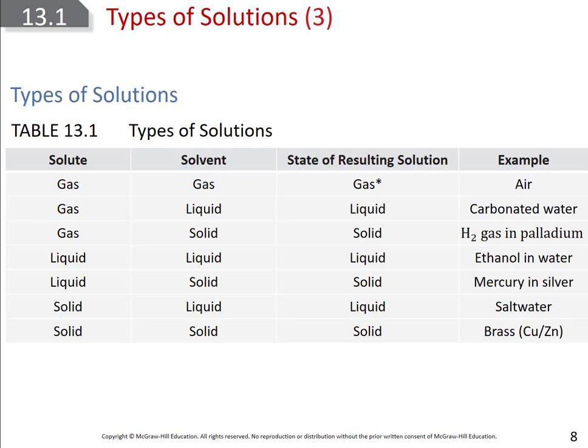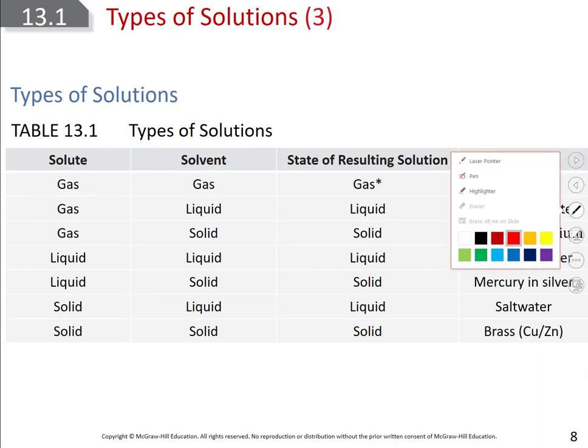This table on page 564 shows examples of types of solutions. In Chapter 4, we focused on aqueous solutions, meaning something dissolved in water. Usually we were dealing with a solid compound dissolved in the water, though some were originally gases — for example, hydrogen chloride is a gas that dissolved in water becomes hydrochloric acid. We can also have all different combinations of states of matter dissolved in one another.